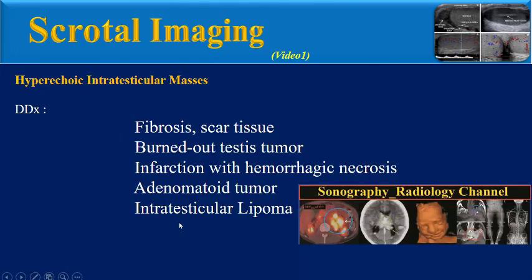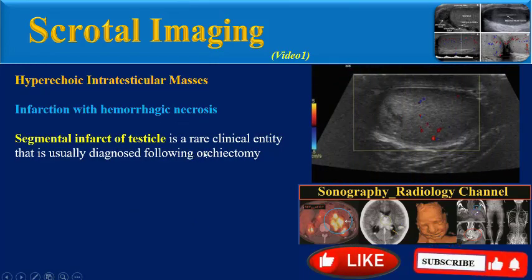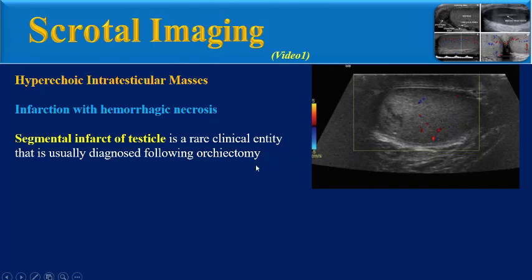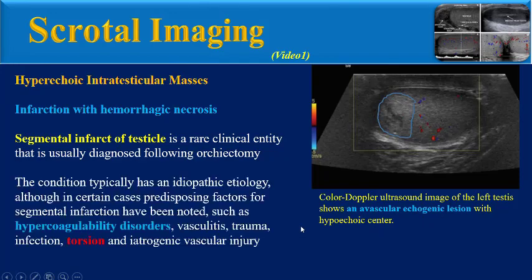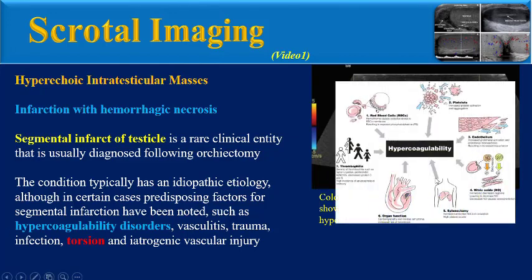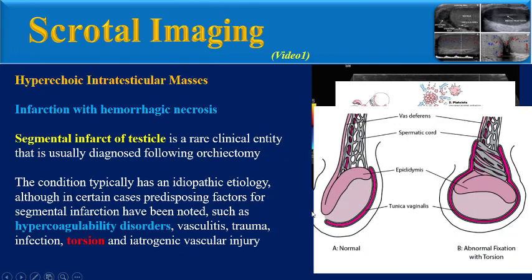Another entity is infarction with hemorrhagic necrosis. Segmental infarct of the testicle is a rare clinical entity that is usually diagnosed following orchiectomy. This color Doppler ultrasound image shows an avascular echogenic lesion with a hypoechoic center. The condition typically has an idiopathic etiology, but in certain cases predisposing factors have been noted, such as hypercoagulability disorders, vasculitis, trauma, infection, testicular torsion, and iatrogenic vascular injury.